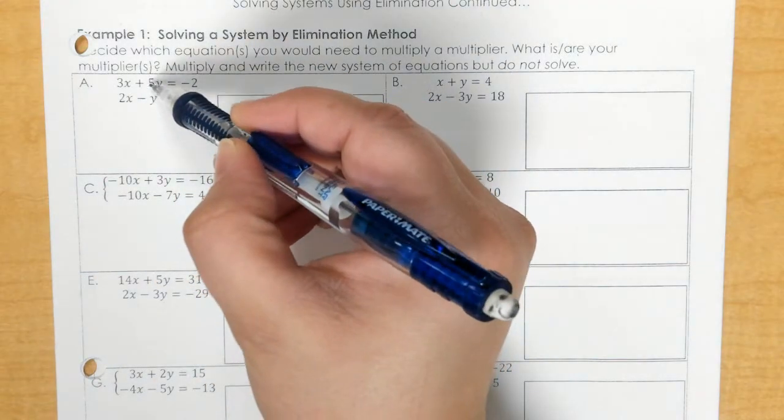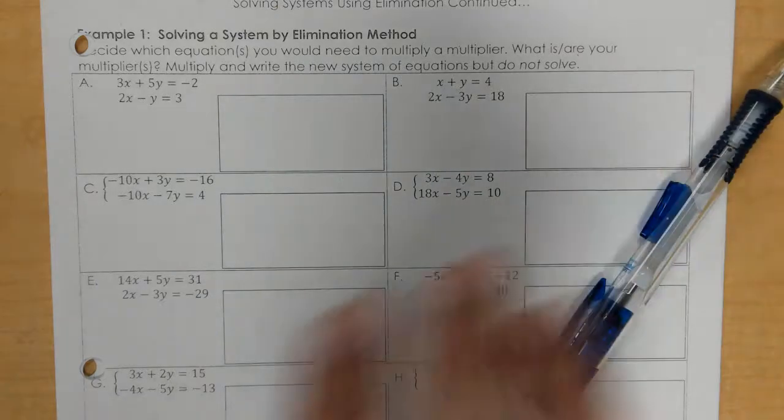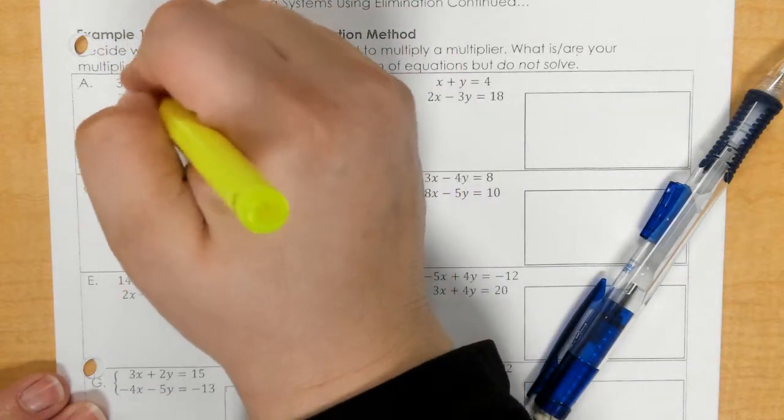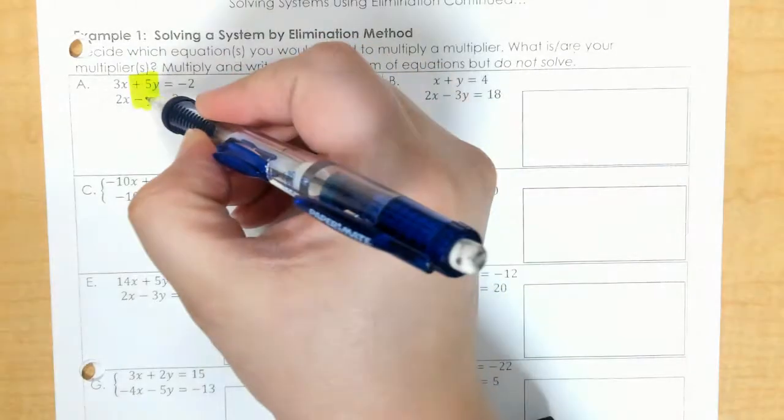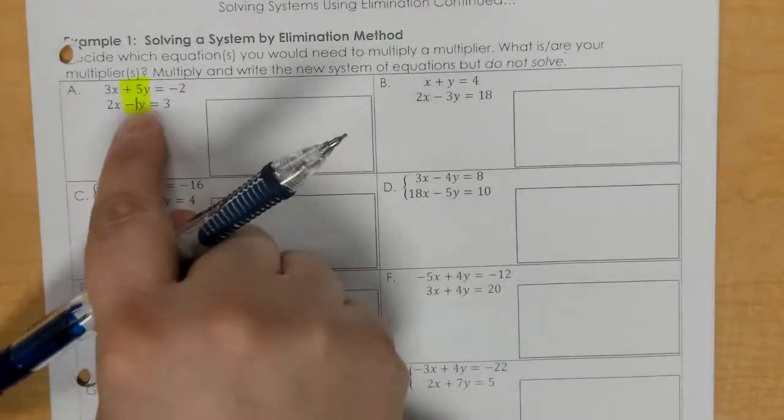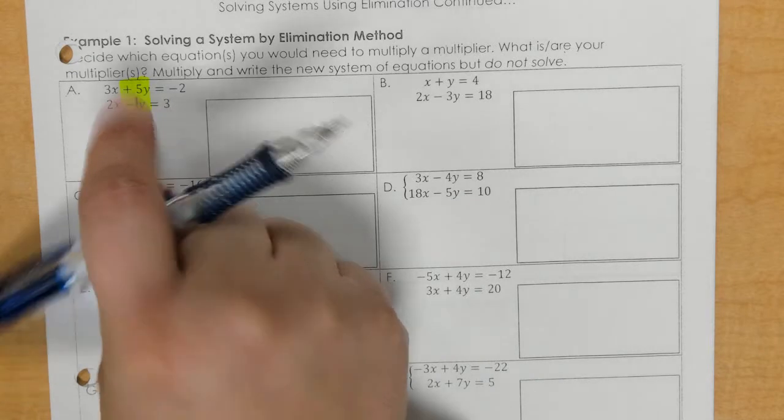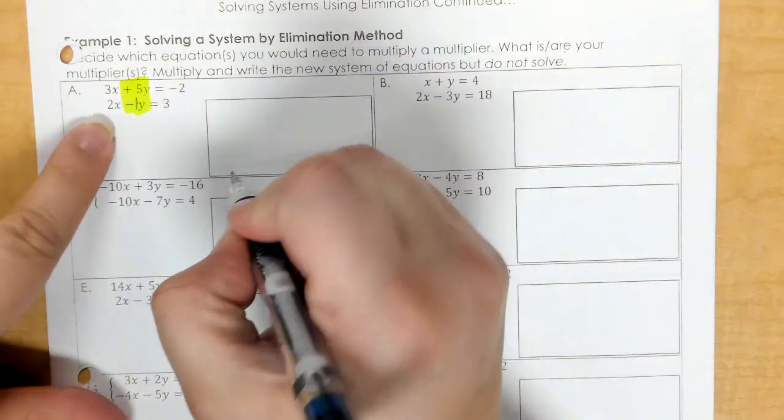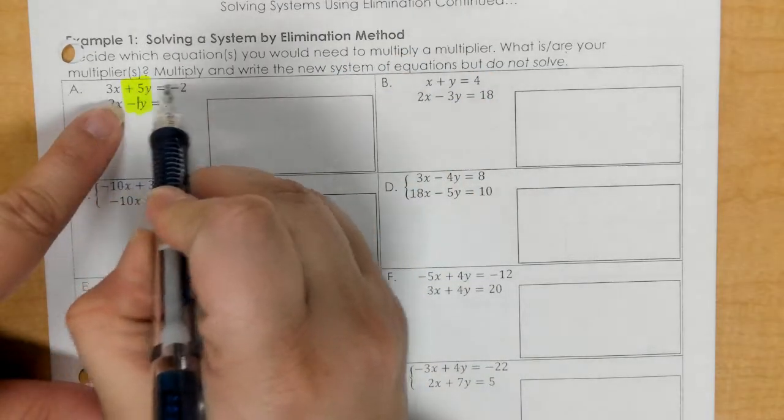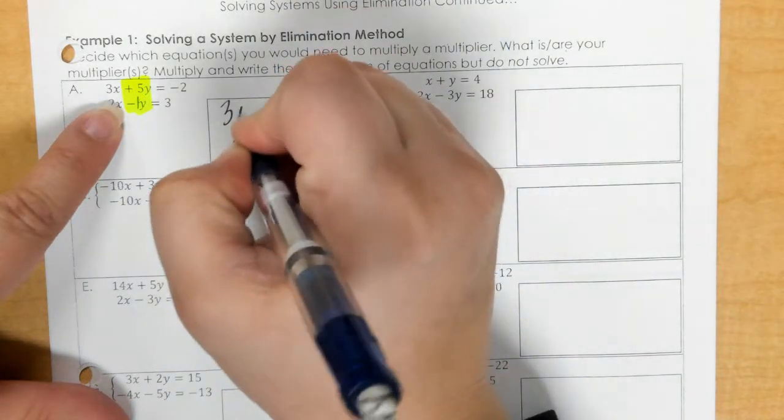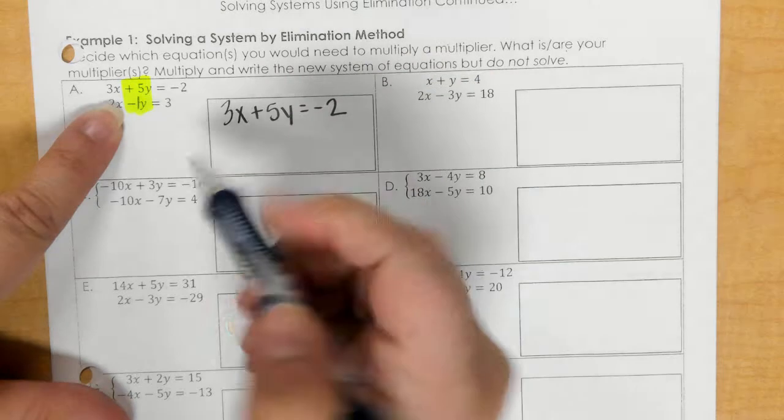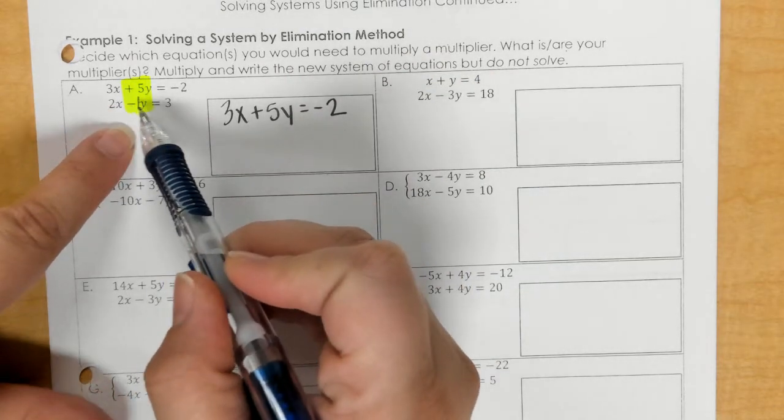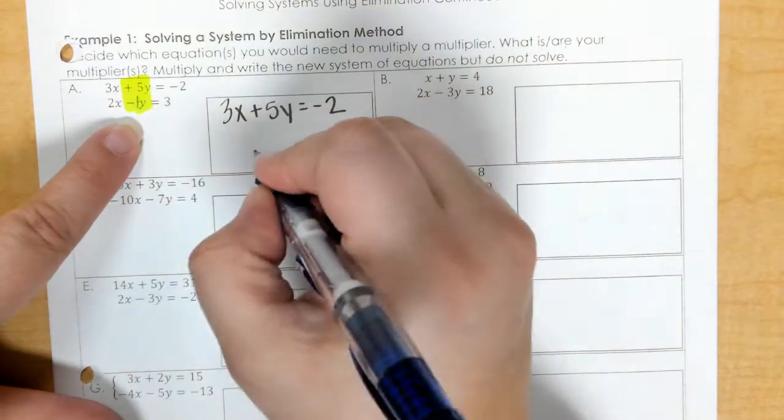So I want to look at the y's. I have a 5y and a negative 1y, and I've got to figure out how to make this a negative 5 to be opposite of that. So my goal is to keep the one at the top the same and then make this one so that this term is a negative 5y.